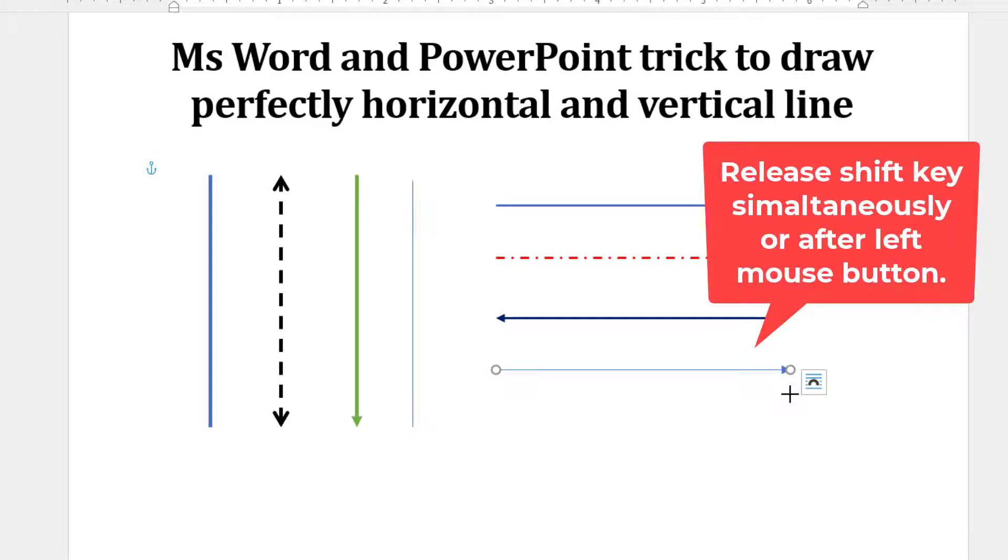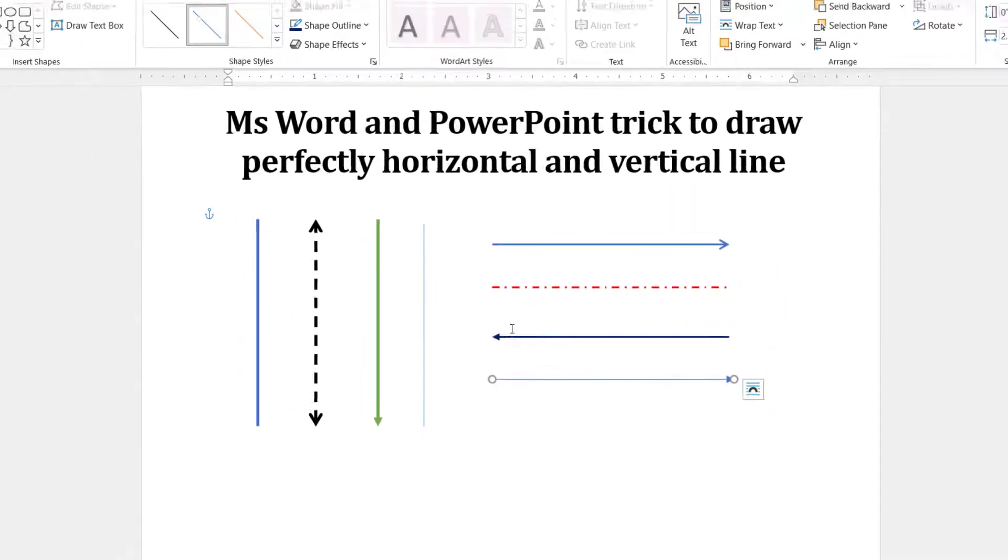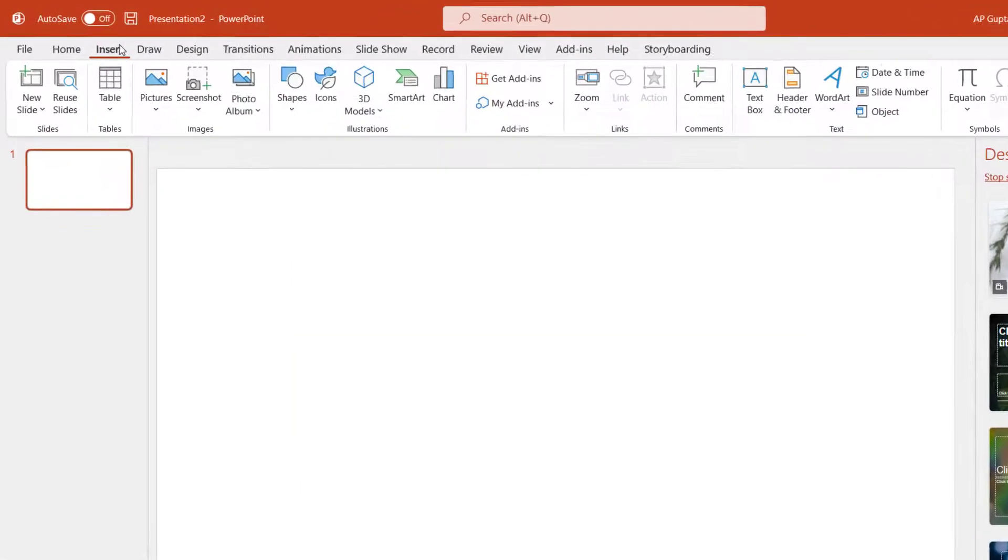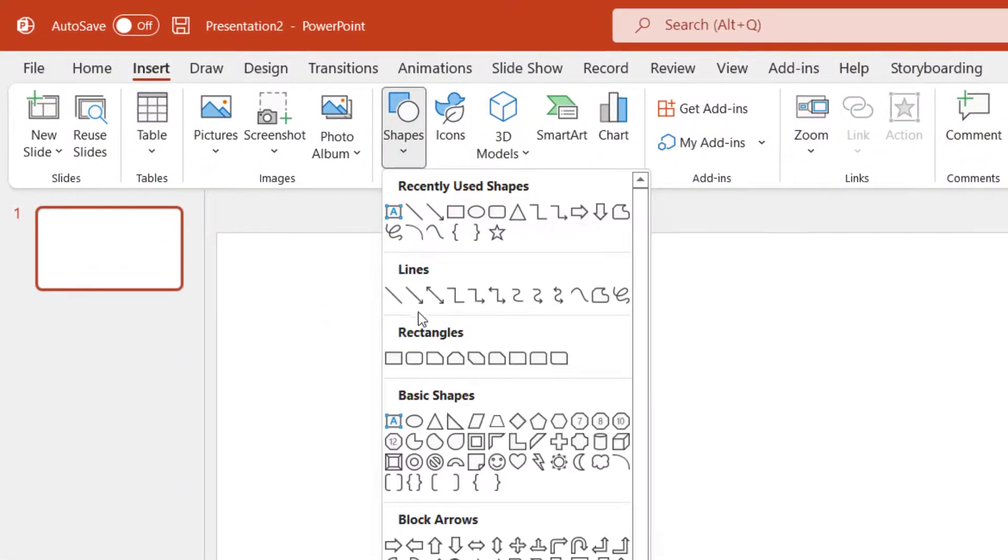Once you are done, release the left mouse button and Shift key. Make sure that you release the Shift key after releasing the left mouse button. So this is how you draw horizontal and vertical lines.